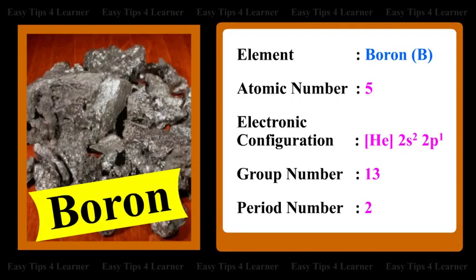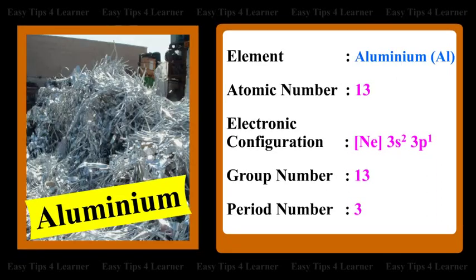For boron, the atomic number is 5, and the electronic configuration is [He] 2s² 2p¹. The group number is 13 and the period number is 2. For aluminium, the atomic number is 13, the electronic configuration is [Ne] 3s² 3p¹, the group number is 13, and the period number is 3.